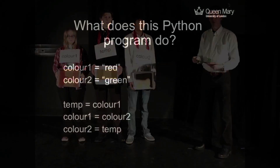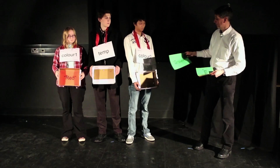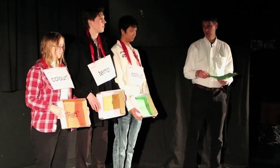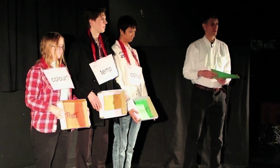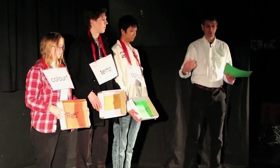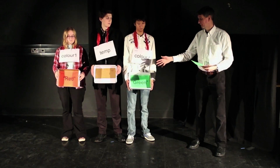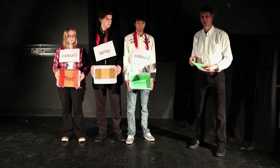A program is a series of instructions, and you execute them one at a time in the order they're given. That was the first instruction. The second instruction in this program is color2 gets the value green. So we find color2 and put the value green in it. So far, they are just acting like boxes — we can put something in, it's stored there, and if we want it back we can use the name to find the right box and look in it.